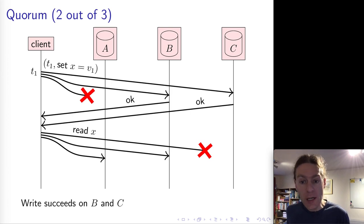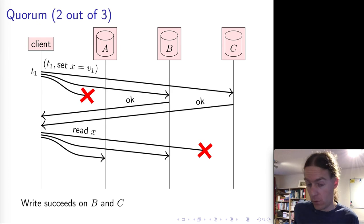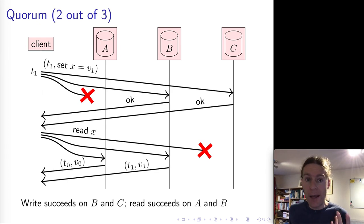Now, the client goes to read. And it sends its read again to all three replicas. As before, only two of them get it. And so in this case, for some reason, the read to C doesn't go through, but the reads to A and B do go through.